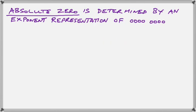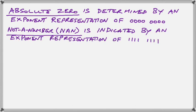Absolute zero has to be represented with an exponent representation of zero. We also reserve the maximum representation, which would be 255 or FF, for a NaN — which is 'not a number.' That would be something that results if you tried to divide by zero or some other mathematical operation where you cannot get a valid number in the system.